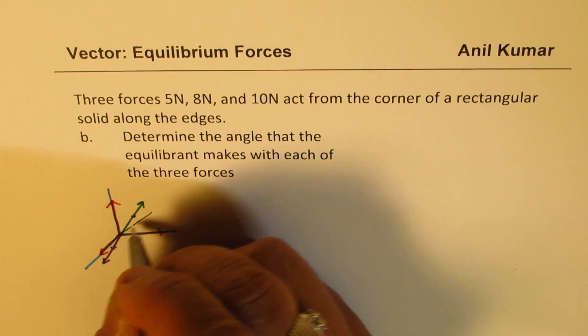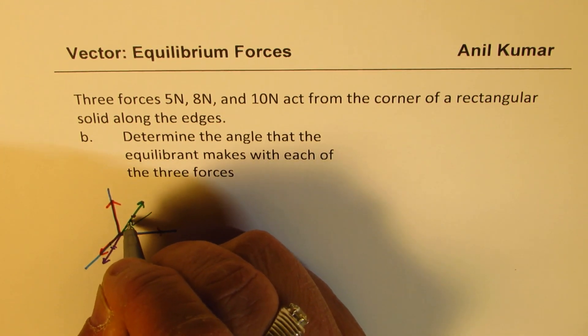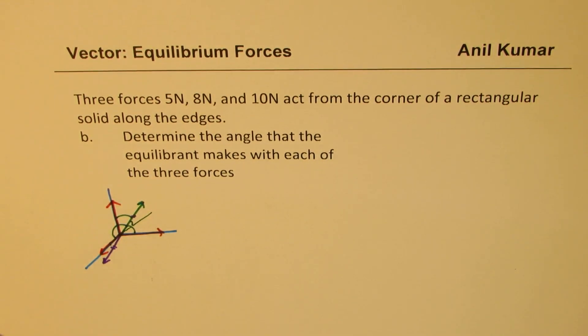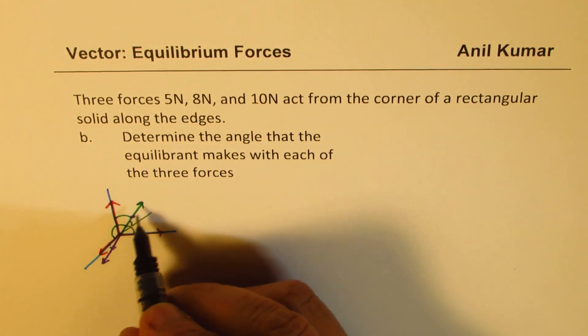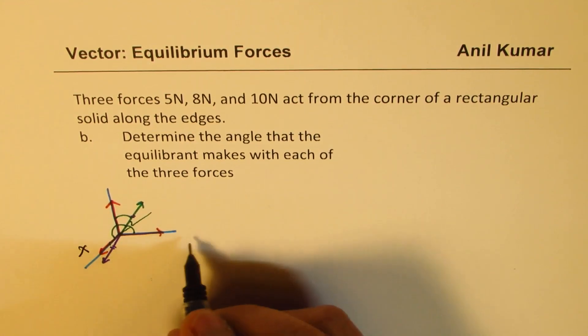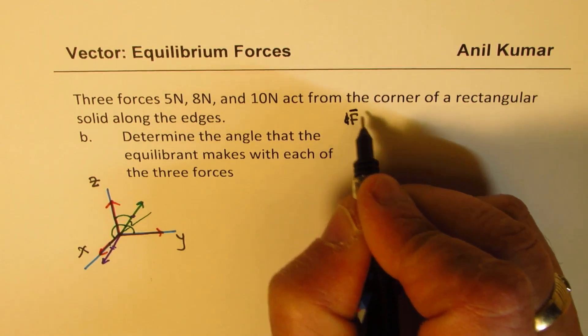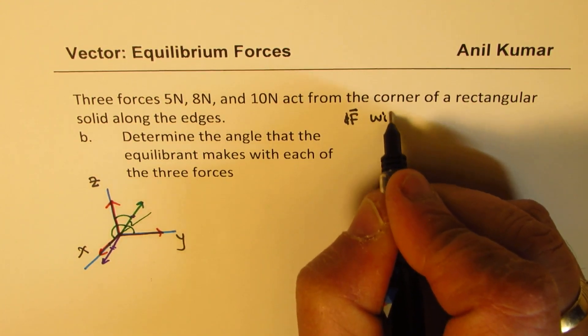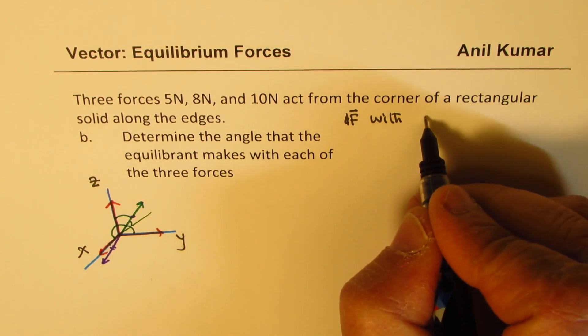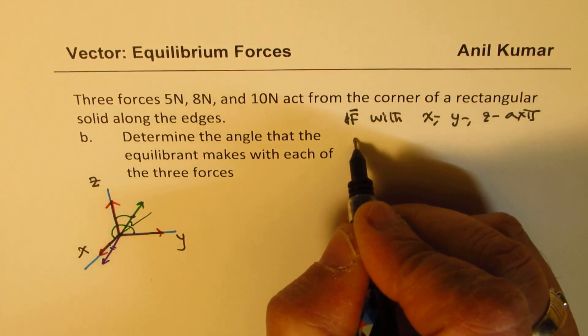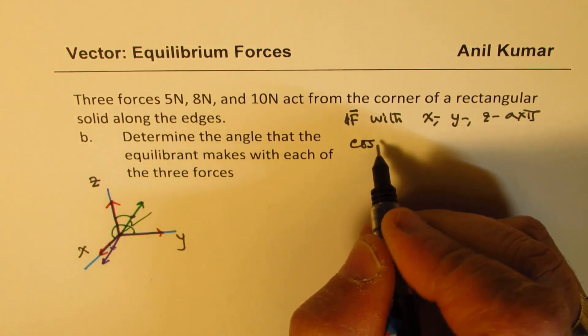So we'll find the angle which this makes with the x axis, which it makes with the y axis and which it makes with the z axis. So let me show these three angles. These are the axes: x axis, y axis and z axis. So we are trying to find the angle for our force with x, y and z axis. That means we are trying to find direction cosines.